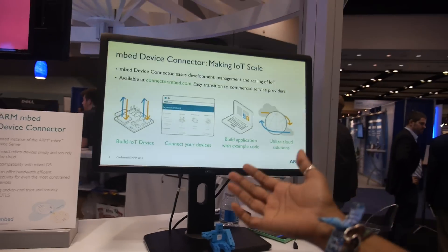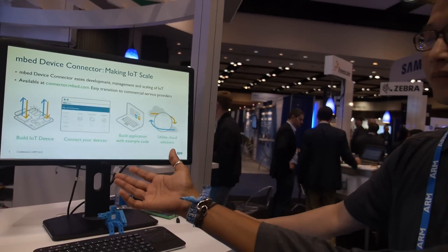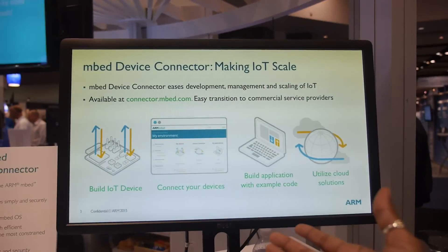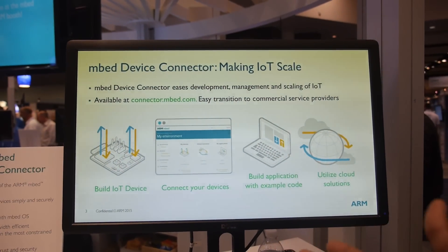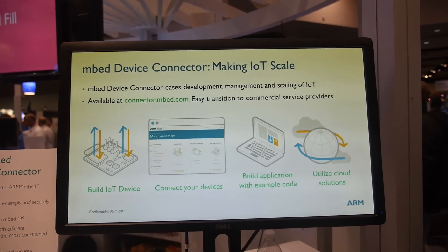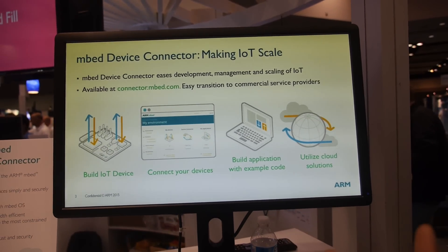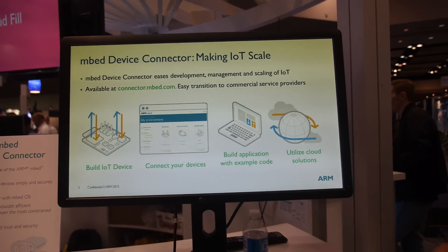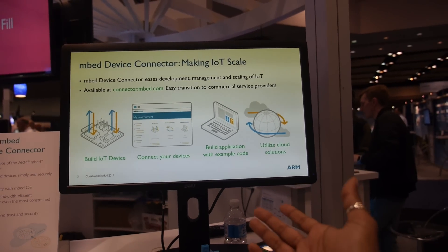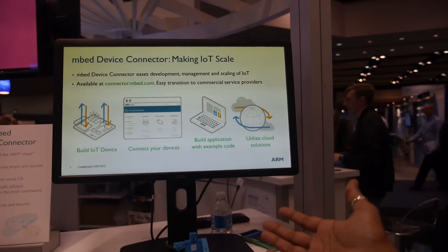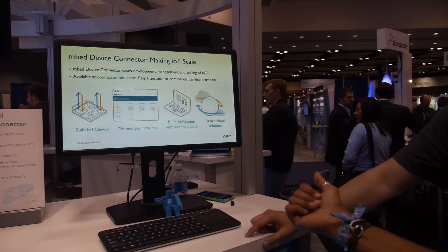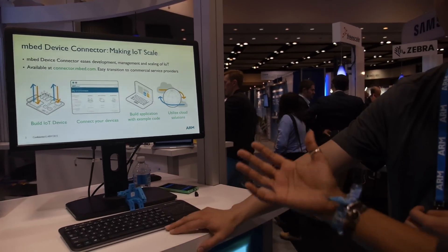Essentially, you build an IoT device, get onto the console at connector.embed.com, connect all your devices, and use example code available to build your application. It makes it really easy to then connect to cloud applications or cloud solutions.